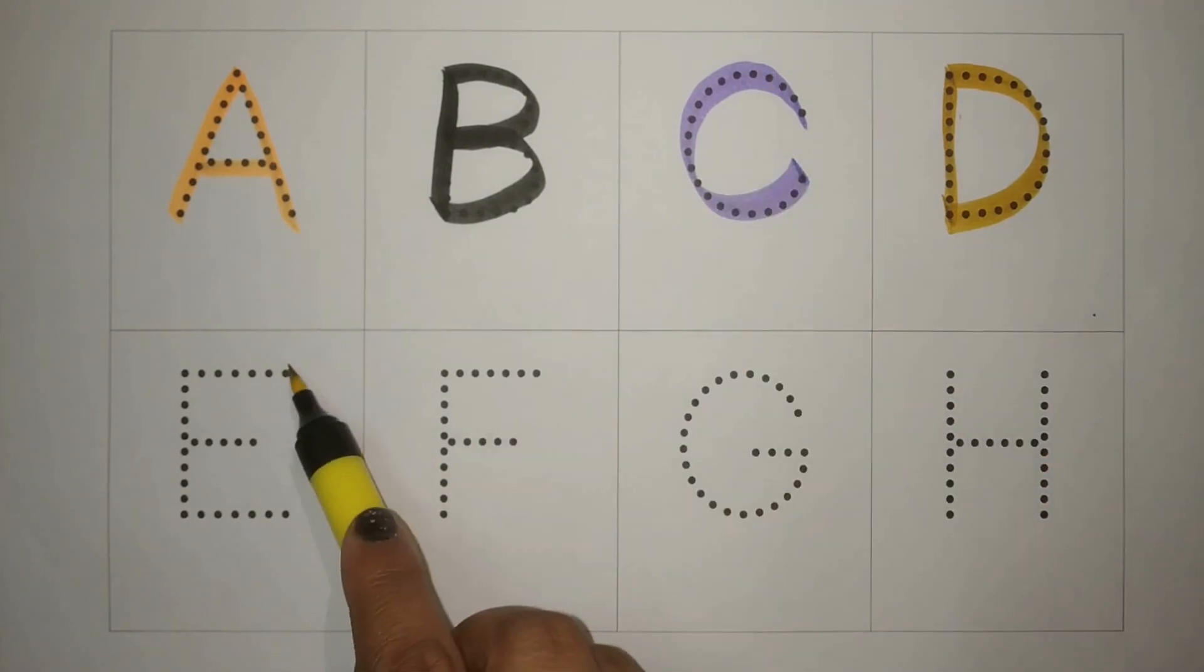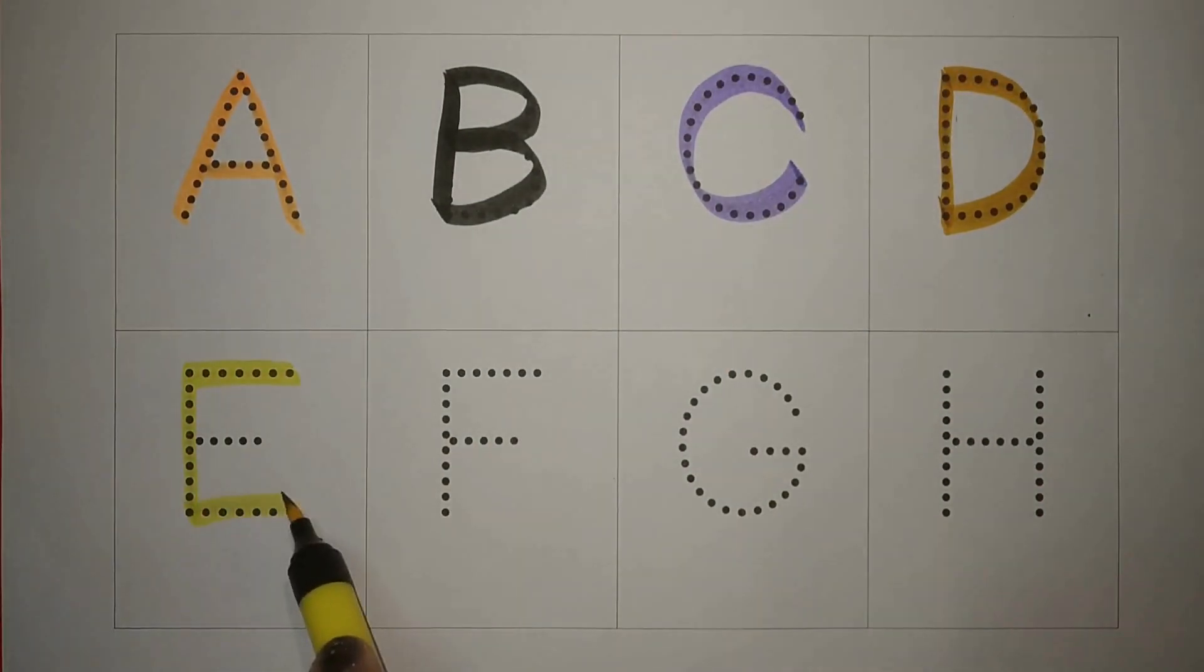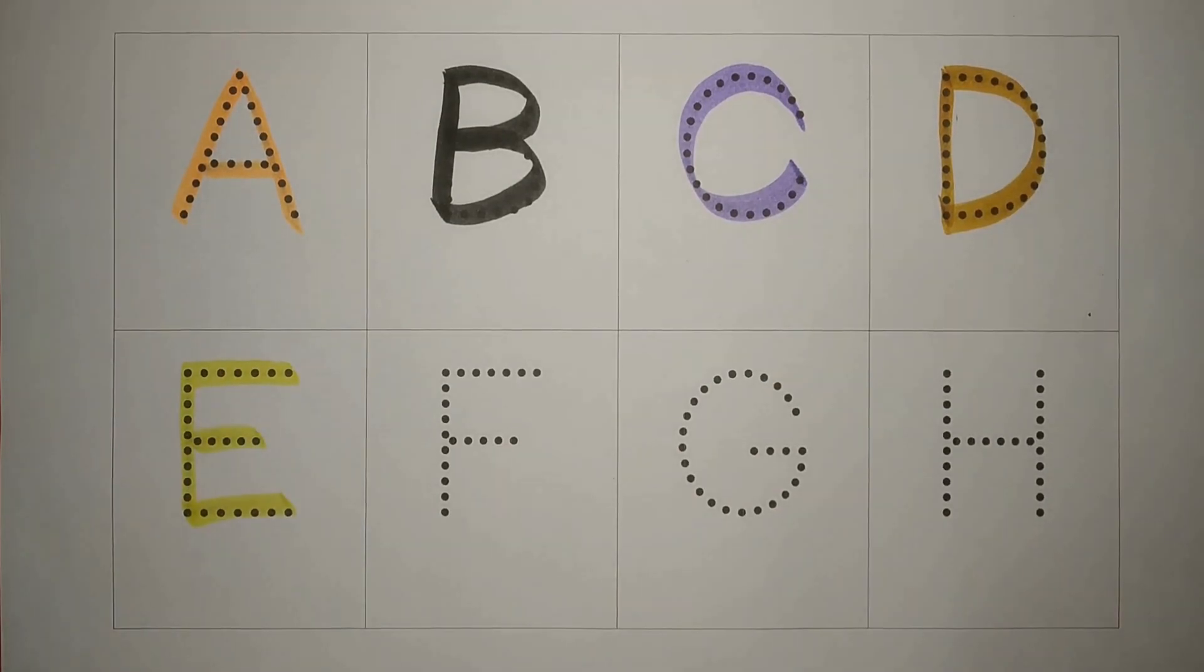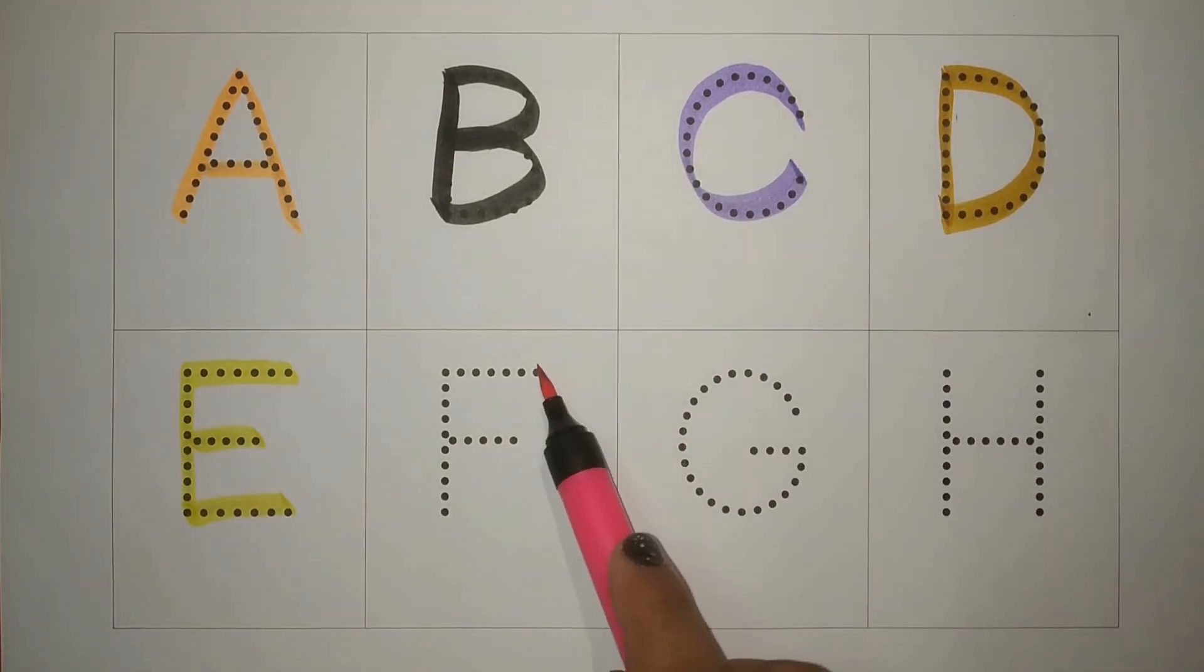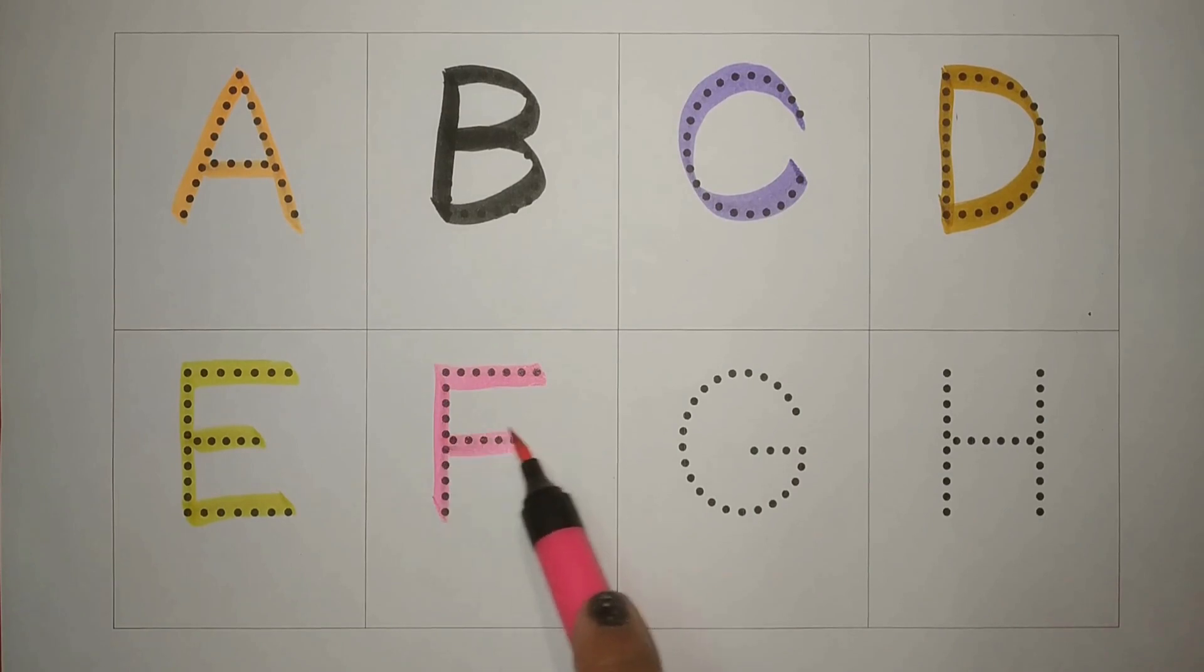Yellow, E, E for elephant, haati. Pink, F, F for fish, machli.